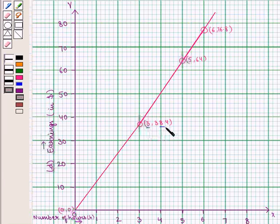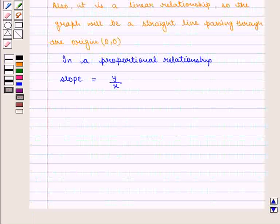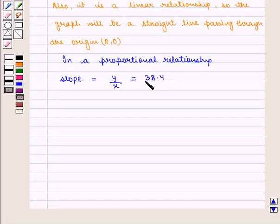From this graph we take the value of y as 38.4 and the value of x as 3 and therefore we get y by x is equal to 38.4 by 3 and is equal to 12.8, which is also called as unit rate.